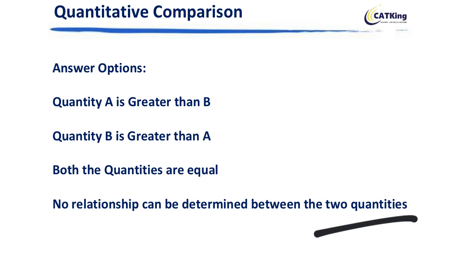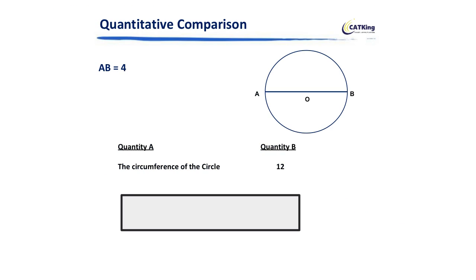Now let's take a couple of examples to understand what kind of questions come in this. The first example for today is based on your geometry, okay basic formulas of geometry. So you have a circle with AB as the diameter and the length of the diameter is 4. My first quantity is circumference of the circle. Quantity B is the value 12. So that means I have to compare the value of circumference of the circle with 12.